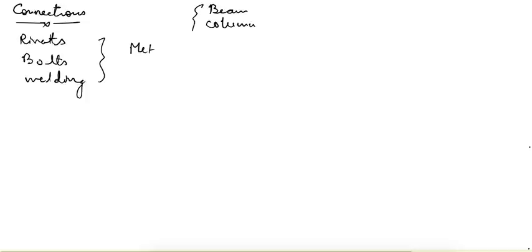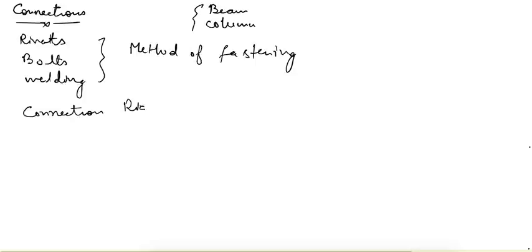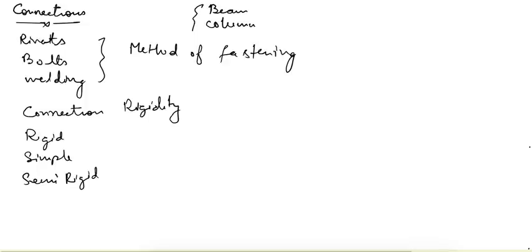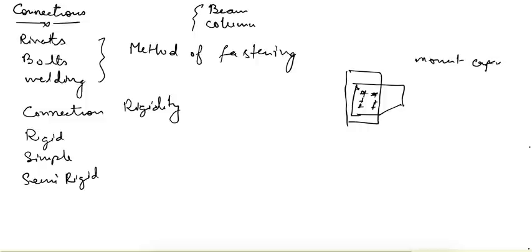There is one classification depending upon the method of fastening. Apart from that, there is one more classification: connection rigidity. A connection can be rigid, simple, or semi-rigid. A rigid connection means the moment capacity of the connection is the same as the moment capacity of the individual members. The angle between the two members remains intact even after the application of load — no rotation takes place.